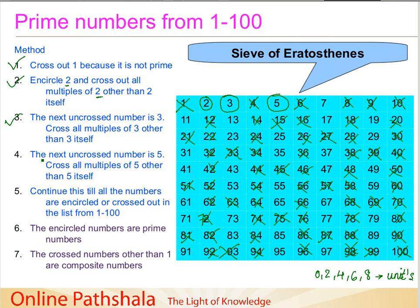We have done the third step. The next uncrossed number is 5. Cross all the multiples of 5 other than 5 itself. The multiples of 5 are all digits which end in 5 or 0. So we have crossed out all the multiples of 5. The method says to continue this until all the numbers are encircled or crossed out in the list from 1 to 100.